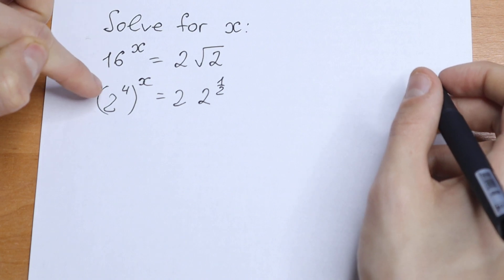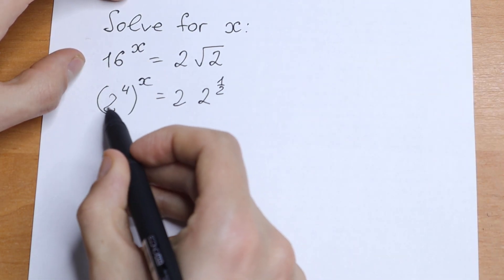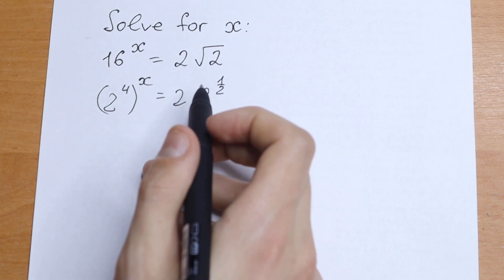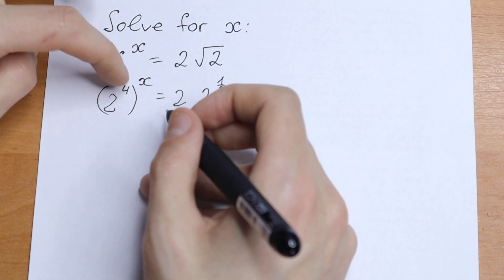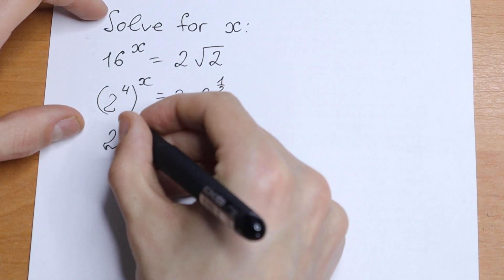So we know the rule right here. If we have a to the power x raised to the power b, it will be equal to a to the power x times b. So we can multiply these powers. So as a result we will have 4 times x, we will have 4x. So we will have 2 to the power 4x.